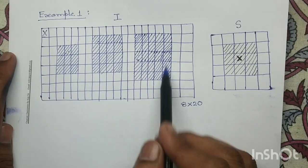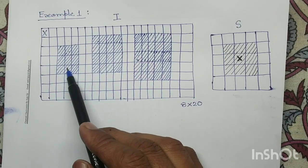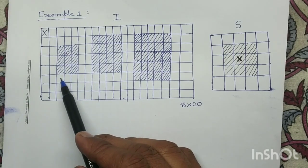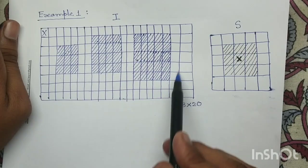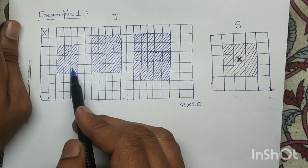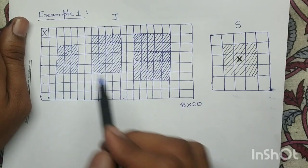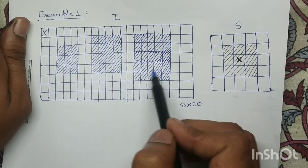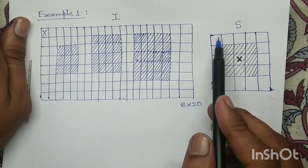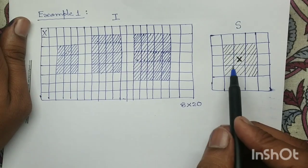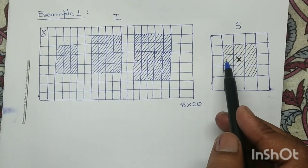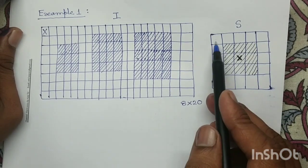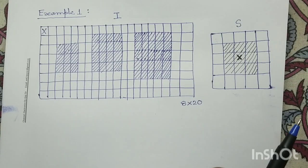Consider this input image I. The shaded portion represents my foreground pixels, i.e., object pixels. The unshaded portion represents background pixels. In this image I, there are three objects: object 1 with 3x3 size, object 2 with dimension 4x4, and object 3 with dimension 5x5. In the structuring element, the shaded portion represents the set of foreground pixels, and the white portion represents the set of background pixels.